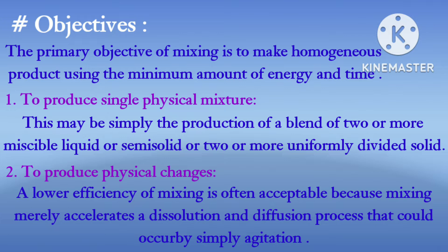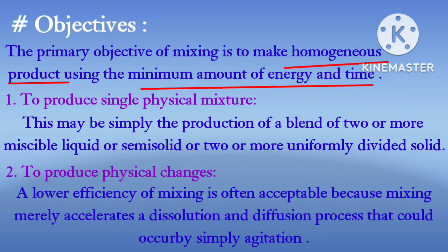Some of the objectives for mixing: one of the main important aims of mixing is to ensure that there is uniformity of composition in the mixed products — which can be solid, liquid, or semi-solid — representing the overall composition of the mixture. One primary objective is to make a homogeneous product using the minimum amount of energy and time.